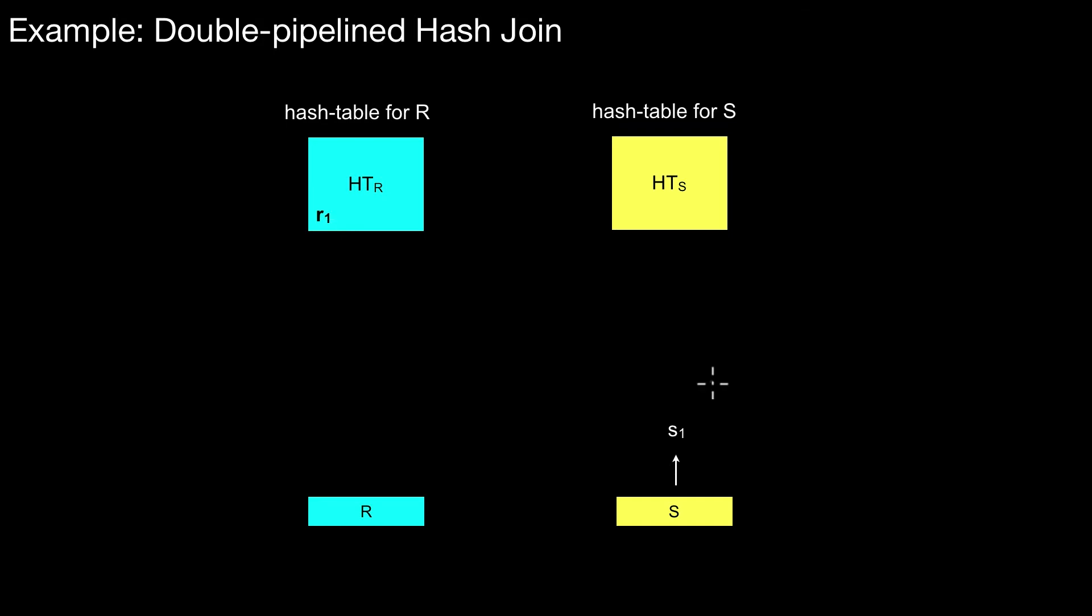Now we could draw an element from S. We draw S1. We probe it against hash table R. Obviously against the other hash table we probe and the own hash table is used for inserting. We probe it and maybe they match and then we produce a join result. Already after drawing the second tuple we have this join result, possibly. And of course we insert it into the hash table belonging to S.